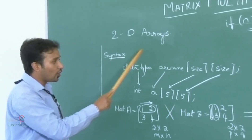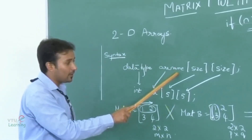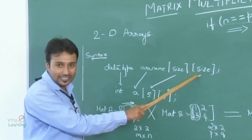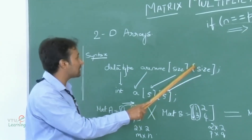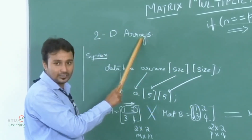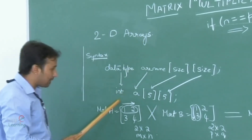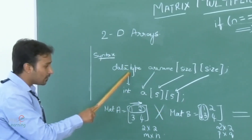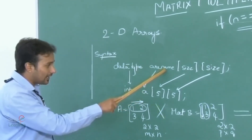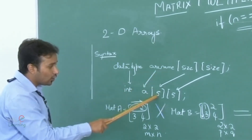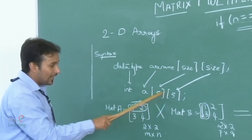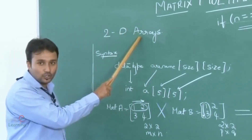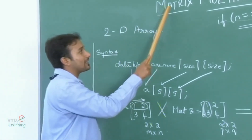The syntax is: data type followed by the array name with two sizes, indicating these are two dimensional arrays. An example is 'int A[size1][size2]', where int is the data type and A is the array name with two sizes. Hence 2D arrays are very much used to represent matrices.